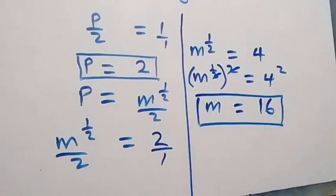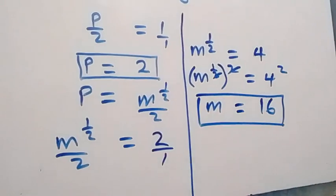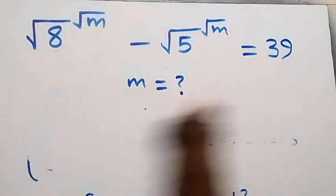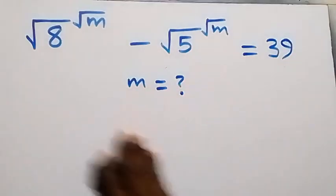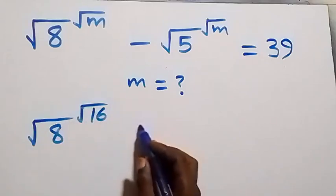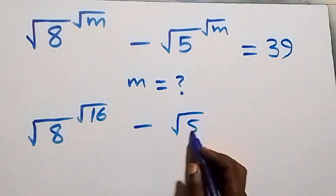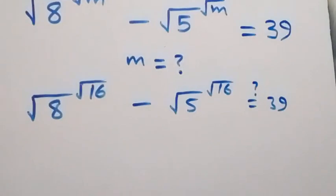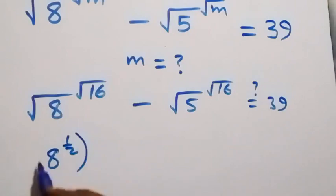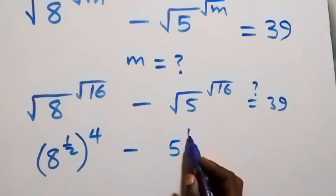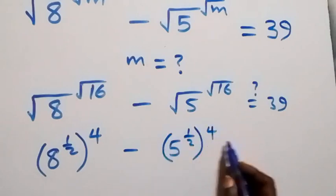Now let's check to verify. With m equals 16, substituting gives: square root of 8 raised to power square root of 16, minus square root of 5 raised to power square root of 16, equals 39. We write root 8 as 8 to power half, raised to power root 16 which is 4, minus 5 raised to power half, raised to power 4, equals 39.